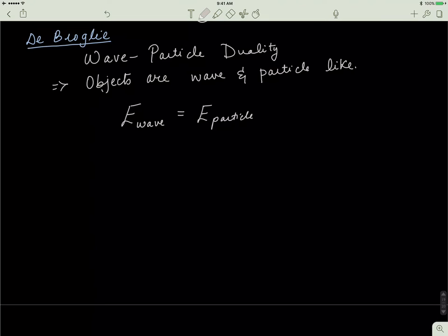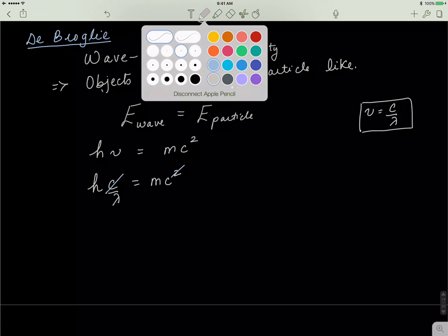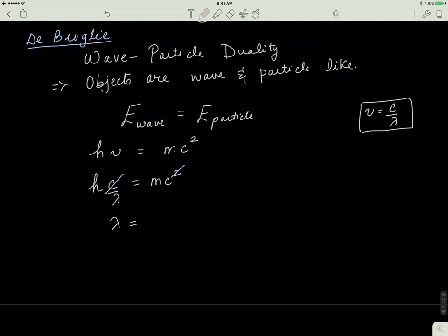So, as we know, the energy of a wave is H nu and the energy of a particle is MC squared. We can rewrite nu as C over lambda because that's the relation. This C cancels out with one of the C's in the C squared. And, what you can do is you can solve for lambda and what you get is H over MC. And, this is the formula for the wavelength of a particle.